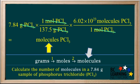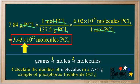So the final answer is 7.84 divided by 137.5 times 6.02 times 10 to the 23rd, which comes out to 3.43 times 10 to the 22nd molecules of PCl3.